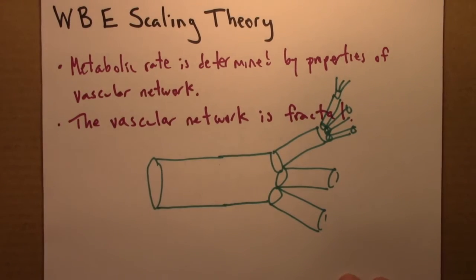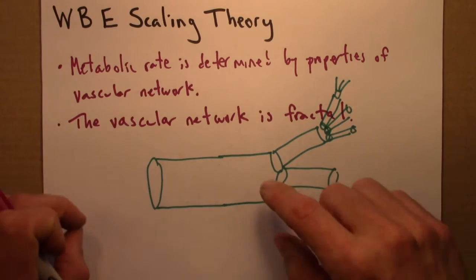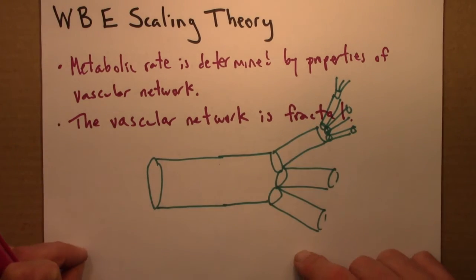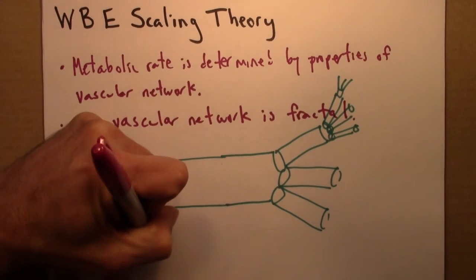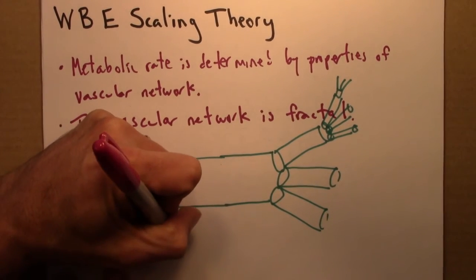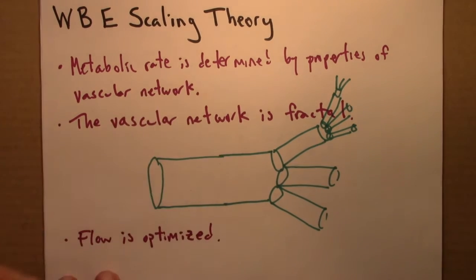The next step in the logic that produces the scaling theory is to state that the flow through this network is optimized. So flow is optimized. And what that means is, in order for the flow to be optimal, to not slow down or have any traffic jam, so to speak,